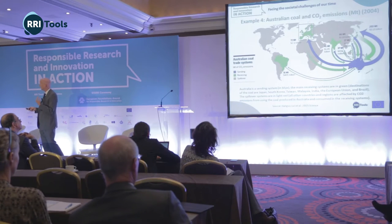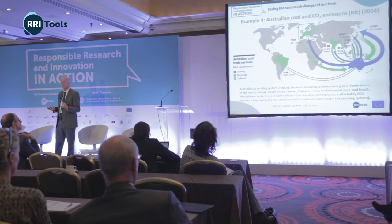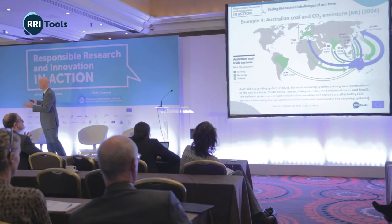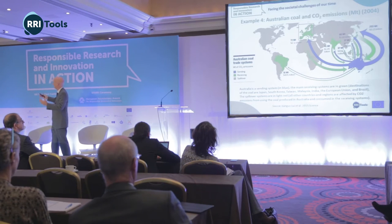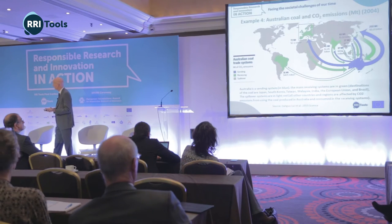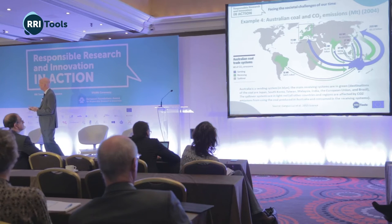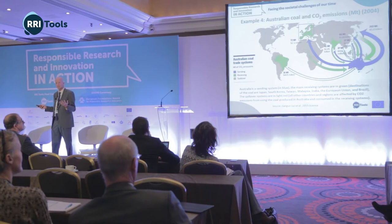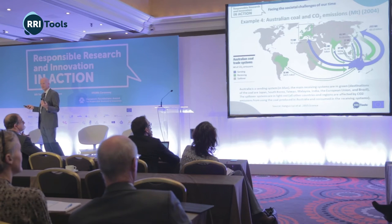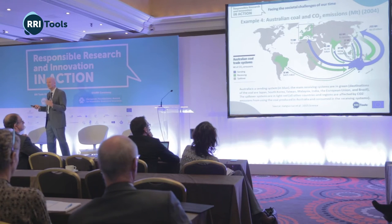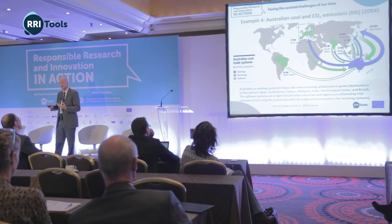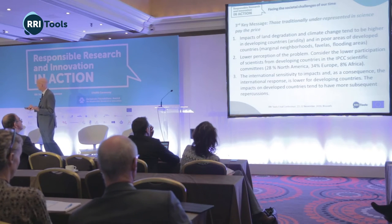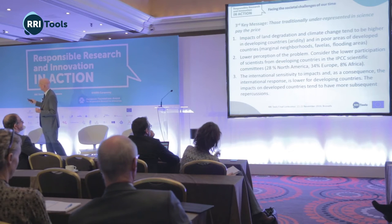An emissions example: coal from Australia in 2004 — the blue lines show the sending nation shipping to receiving countries in green. But the pink lines, called spillover in this model, show that the CO2 emitted by burning that coal influences everybody, not just the country it was burned in.